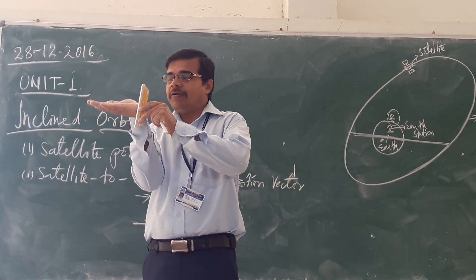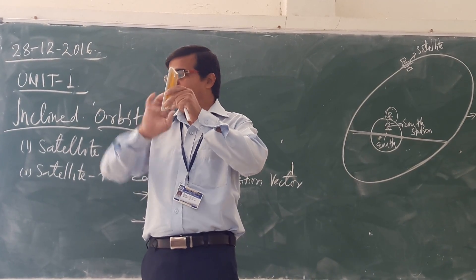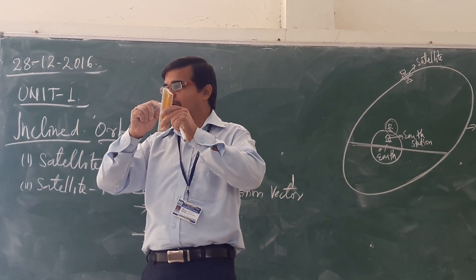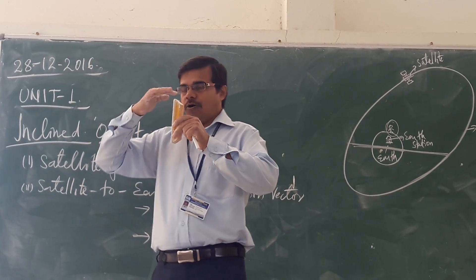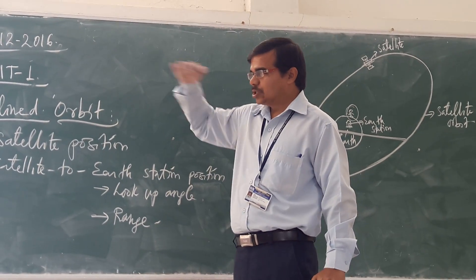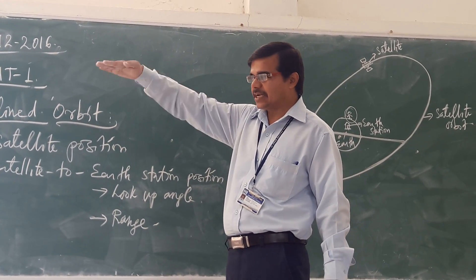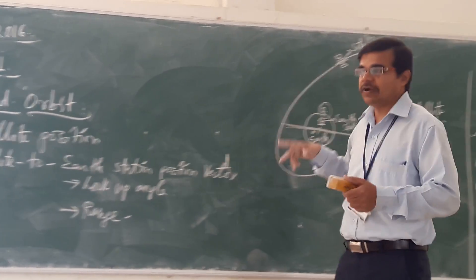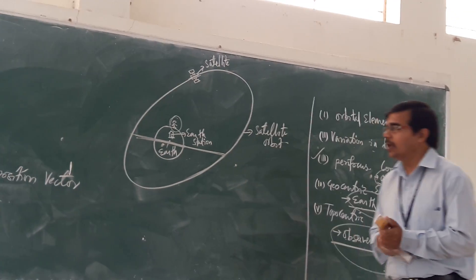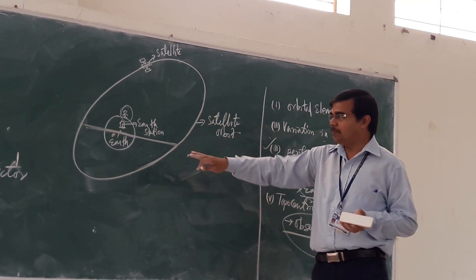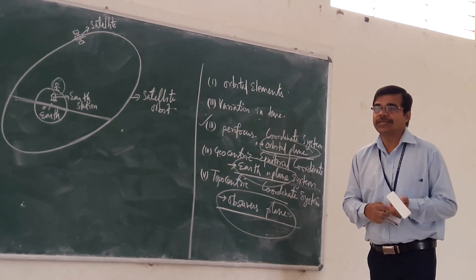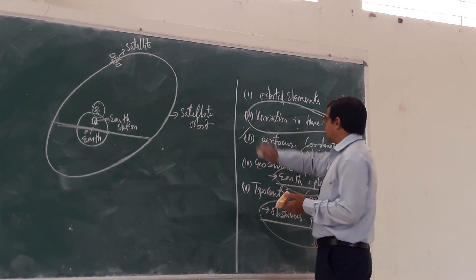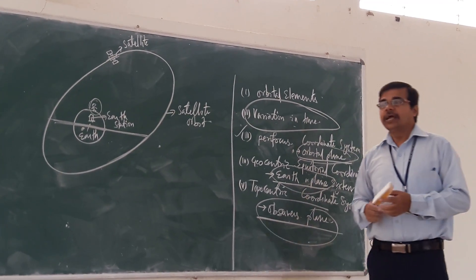The observer may be standing somewhere on the Earth's surface. What is the range for that observer? That is the observer's frame. So three different planes are to be considered if you want to determine the look angle and the range. Now we will go through these parameters, starting with variation in time.